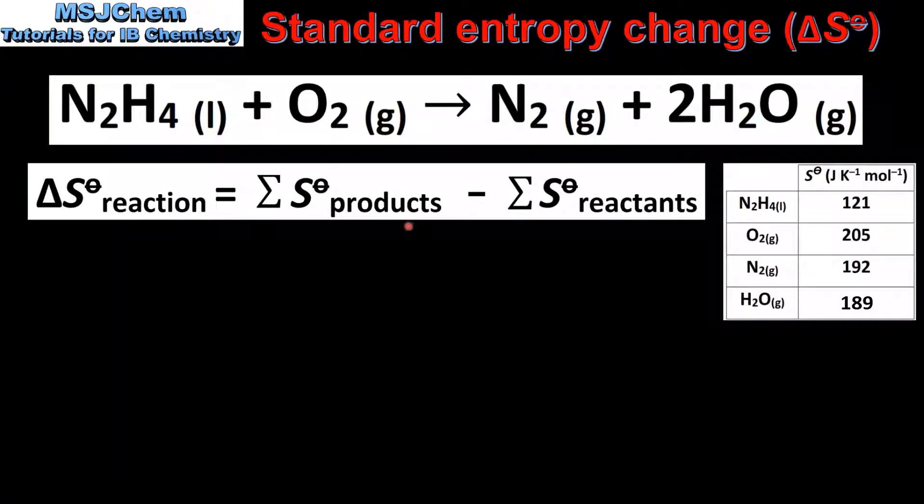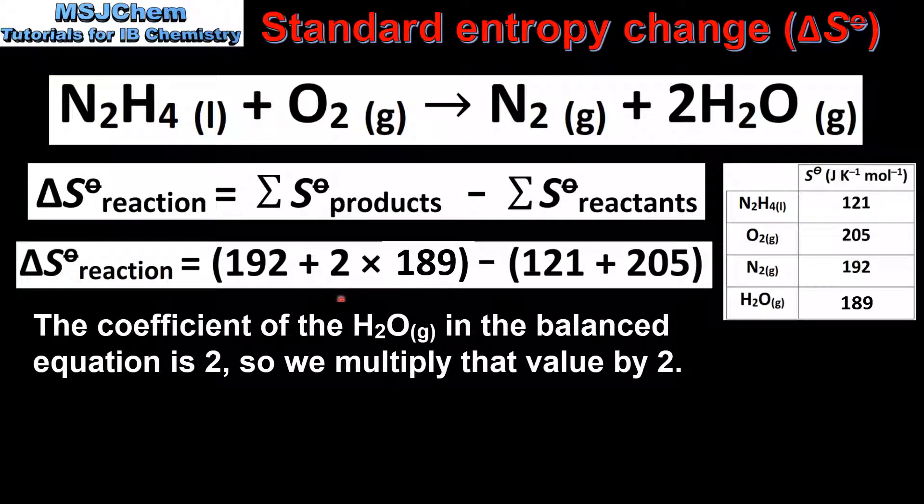Here we have the equation that we're going to use, and we also have a table which has absolute entropy values for the reactants and products. Next we input the values into the equation, not forgetting to multiply the absolute entropy value by the coefficient in the balanced equation.